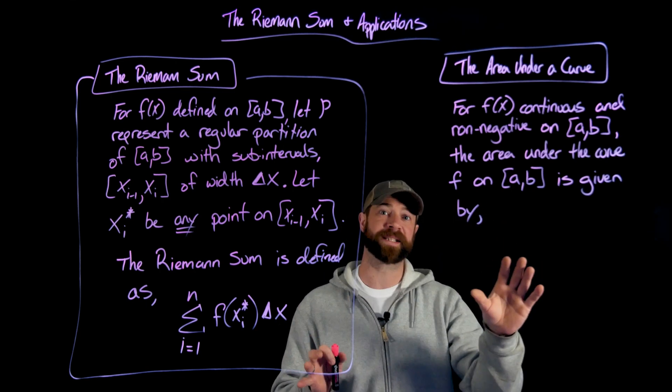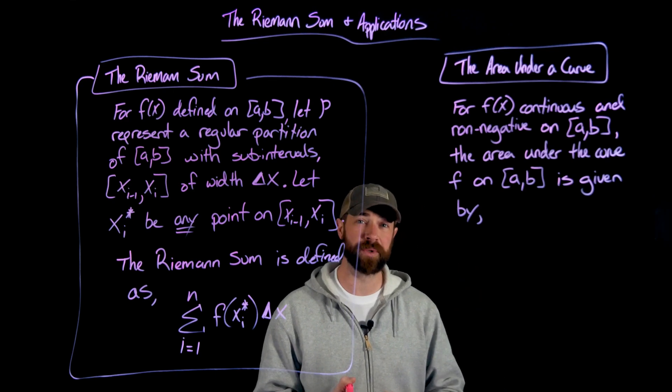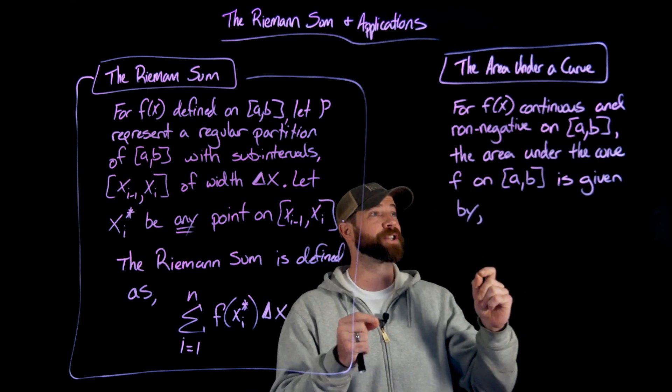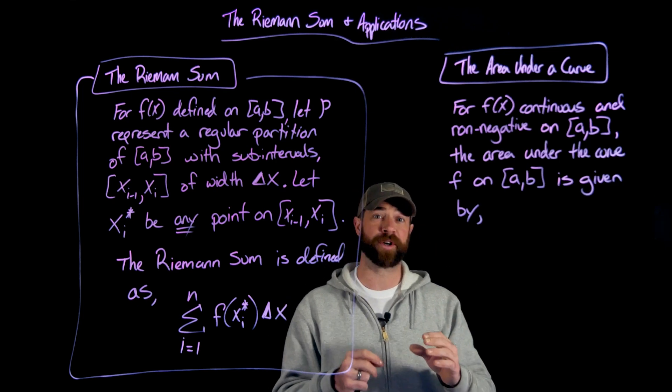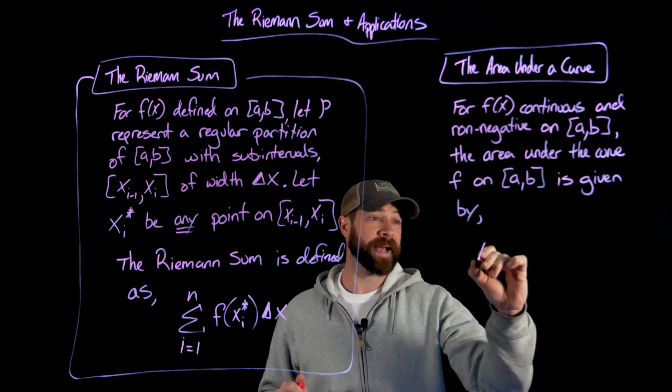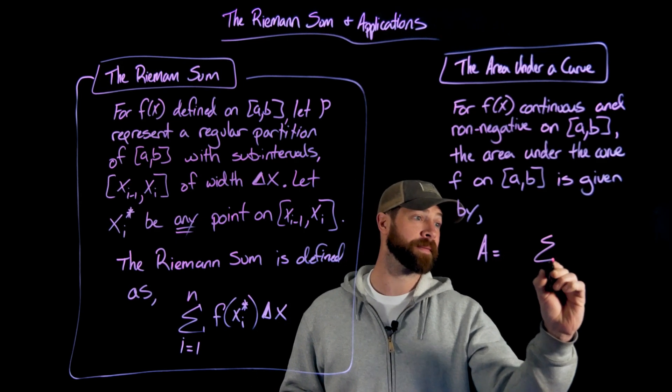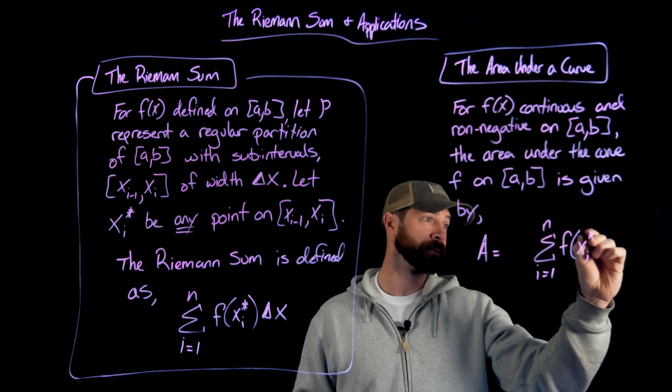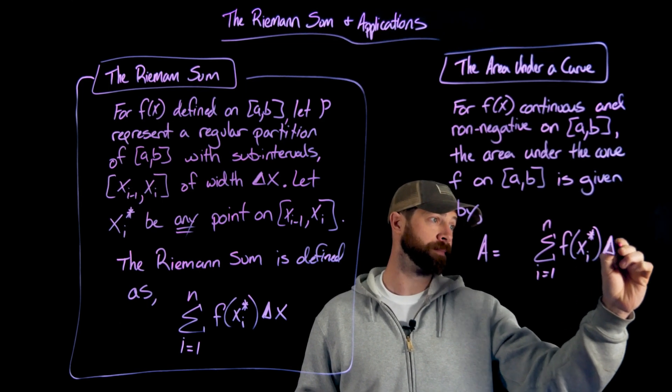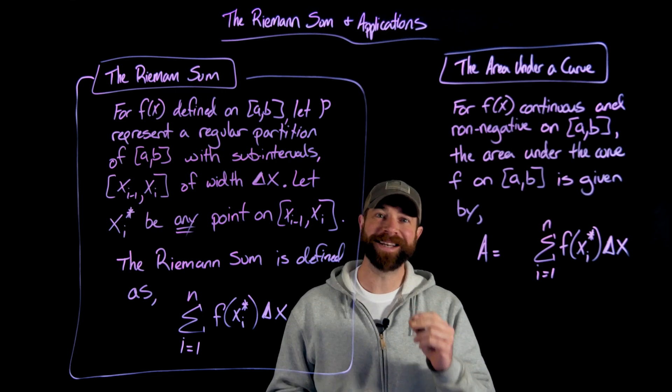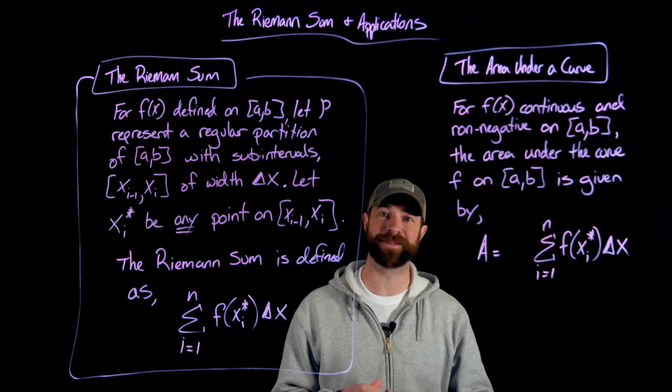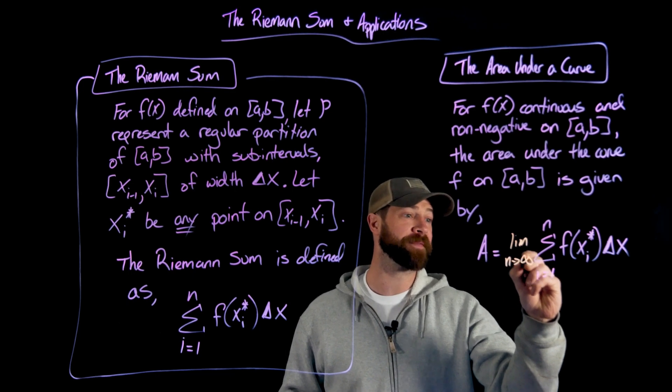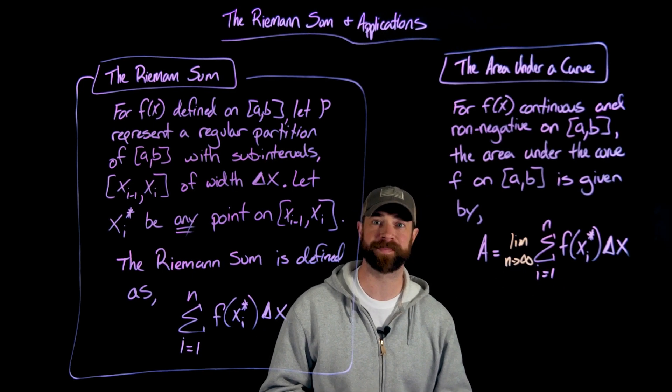But we can now define rigorously the area under a curve. So given a continuous function and a non-negative function, this will be important and we'll talk a bit more about this in the next section. Given a non-negative function on an interval a, b, the area under the curve can be defined by the area, is this Riemann sum right here, with the added component that the number of subintervals that we're going to take on this interval a, b will go to infinity.